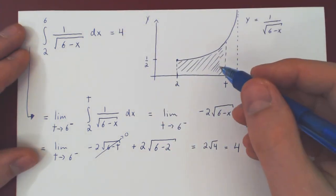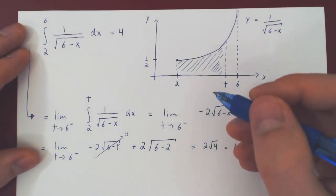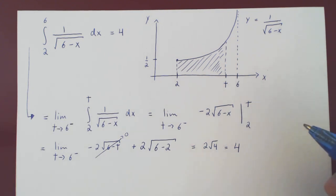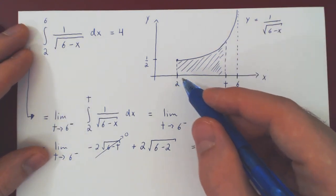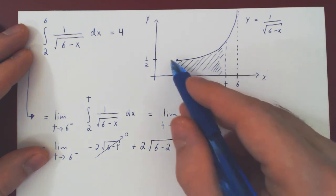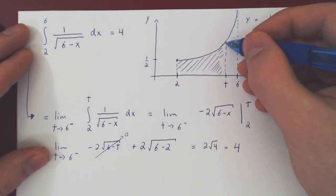And geometrically, if you look at the entire area of the region bounded between x equals 2 and x equals 6, below this curve, even though,